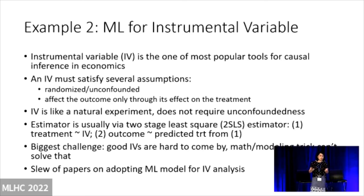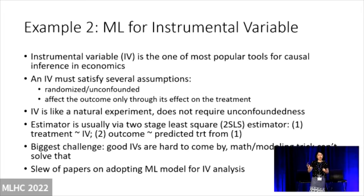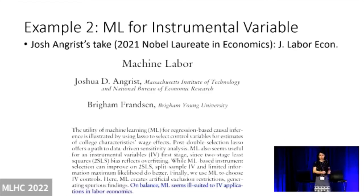In recent years, I've seen a slew of papers adopting machine learning methods for IV analysis. The main idea is: since IV analysis has two-stage regression and both stages have many covariates to choose from, most of this work uses lasso or model selection approaches to select the regression models in the first or second stage. So there are a lot of these kinds of papers, with a lot of fancy math.